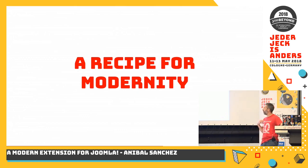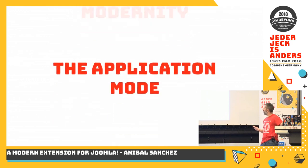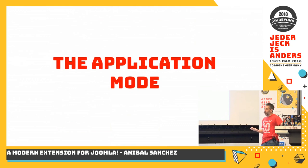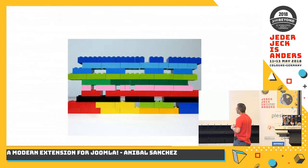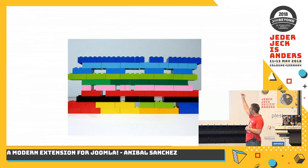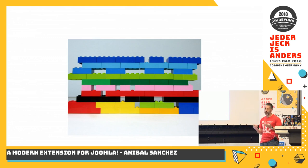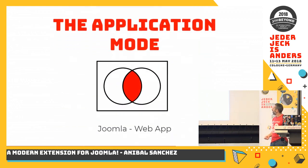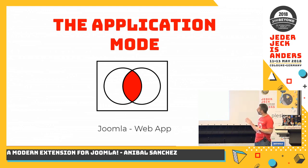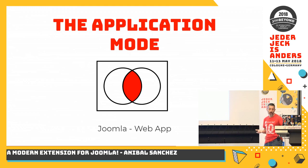I'm going to talk about my recipe for modernity. The idea of the application mode is to have Joomla on the lower part of the stack, and after that we build our technology on top of Joomla. This is the way we are finding today to reuse Joomla in the context of an application. We are going to have Joomla on one side and on the other side the web app. The web app can live inside Joomla or share some space with Joomla.